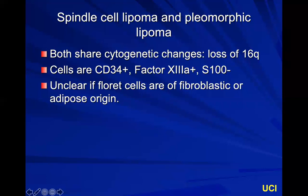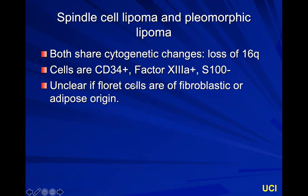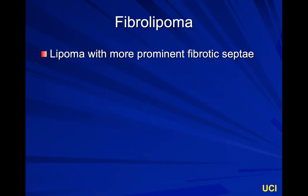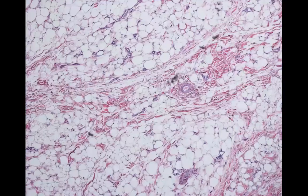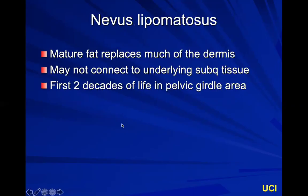Spindle cell lipoma and pleomorphic lipoma share cytogenetic changes: a loss of 16q. These cells are CD34 positive — seen in fibroblasts and adipocytes — and S100 negative, factor 13a positive. A fibrolipoma is a lipoma with more prominent fibrotic septae that look like normal collagen — just more abundant collagen within the lipoma. There's no proliferation of spindled or pleomorphic cells. These lipomas occur on the forehead and don't squeeze out easily; they hang tighter onto the surrounding dermis.